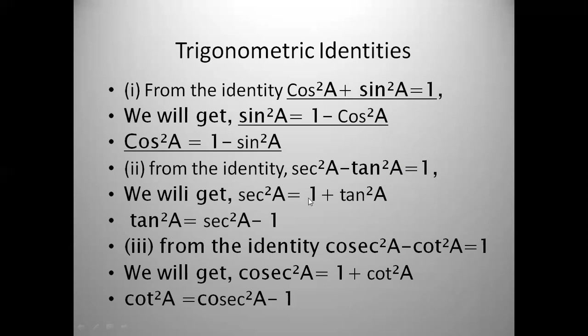So from the second identity: sec²θ is equal to 1 plus tan²θ, and tan²θ is equal to sec²θ minus 1.